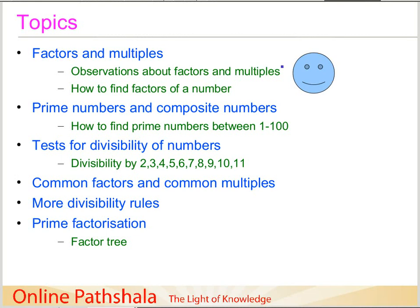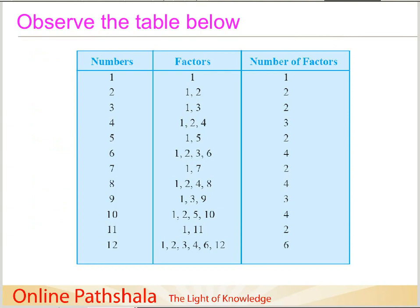Welcome, and let us continue our discussions on the chapter on factors and multiples. In the previous lectures we discussed factors and multiples, our observations about them, and also finding the factors of a number. In this video I'm going to focus on the concept of prime numbers and composite numbers, and then I will also discuss a method to find prime numbers between 1 and 100.